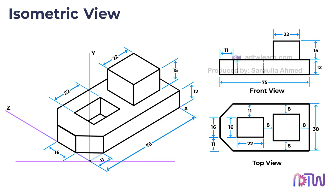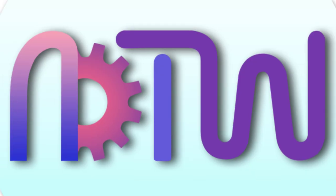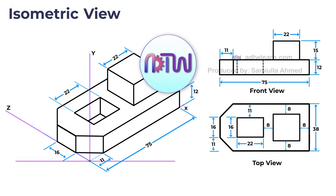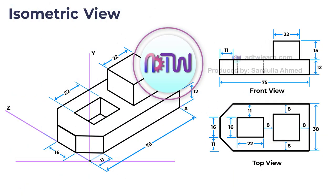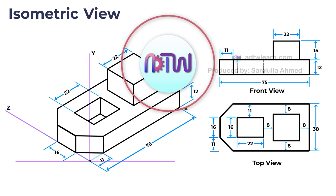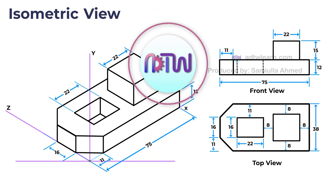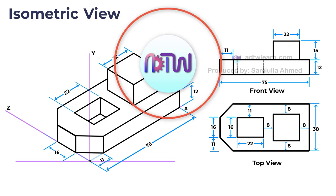This is the final isometric view of the object. I hope this tutorial helped you understand how to construct the isometric view of an object from its orthographic projections. If you found this video useful, please give it a thumbs up by clicking the like button, and if you're new to my channel ADTW You Learn, make sure to hit the subscribe button to stay updated with all my latest videos.